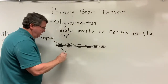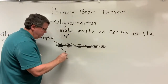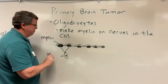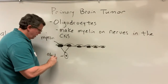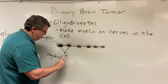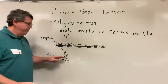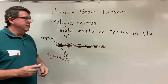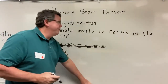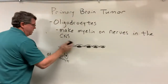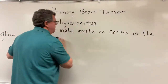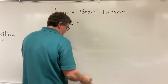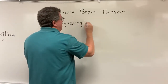So imagine these are kind of like right here, and then I've got my oligodendrocyte which is right here, and it's making the myelin that's on there. So in this case now I'm going to get a tumor on this.